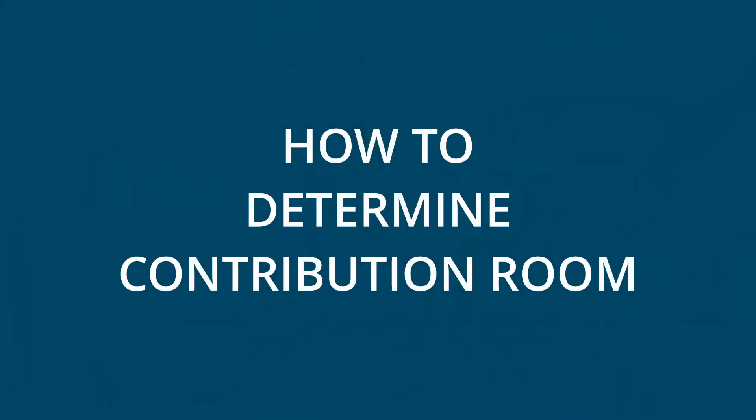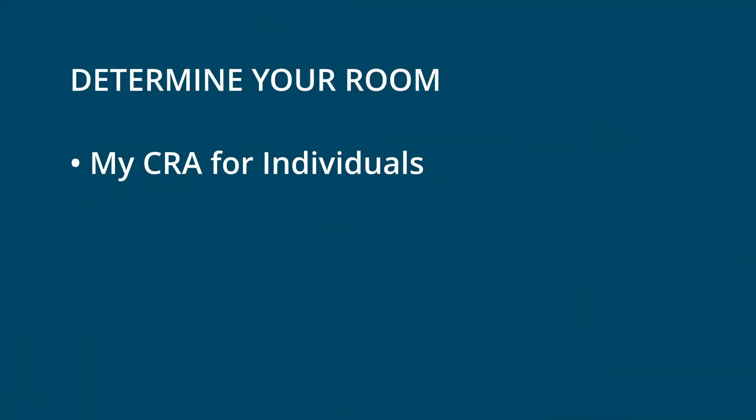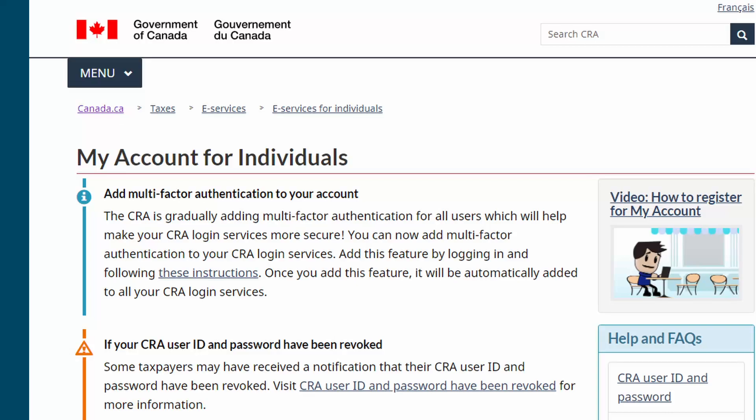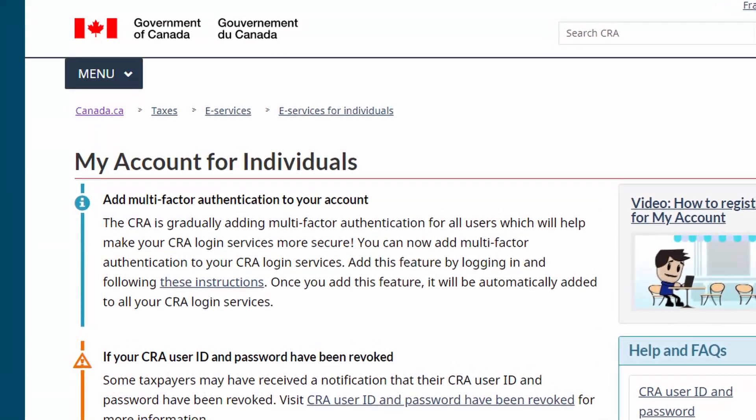It's not always easy to determine exactly what your room is, but there are a few ways to get help. Number one, CRA has an account called My CRA for individuals where you can see your contribution history with some degree of accuracy — not 100% though. When I say it's not 100% accurate, it takes some time early in the year for those numbers to be updated, because they're waiting for information from various investment companies. So use that as one method, but always compare it with your own numbers.